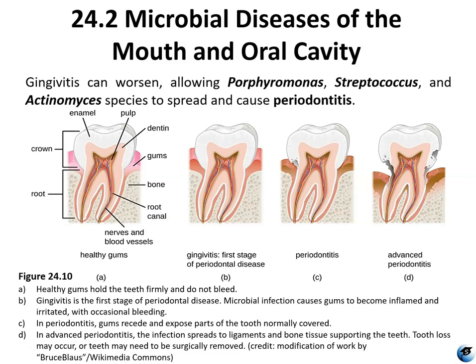Figure 24.10 shows the progression of periodontal disease. Healthy gums are not bleeding and hold the teeth firmly in place. In early gingivitis, microbial infections make the gums inflamed and irritated with occasional bleeding, perhaps only when brushing teeth. As it progresses, the gum line recedes and parts of the tooth normally covered are exposed. In advanced periodontitis, the infection spreads to ligaments and bone tissues that support the teeth, so the teeth are no longer held firmly in the jaw, which can lead to tooth loss.